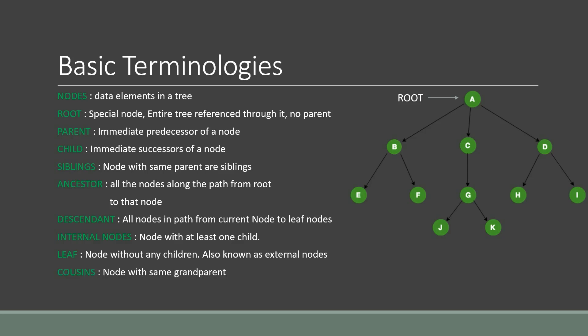Cousins are nodes with the same grandparent. For example, G and F are cousins because they don't share the same parent but they share the same grandparent, which is A. Branch nodes are all nodes except the leaf nodes and the root node — so B, C, D, and G are the branch nodes.